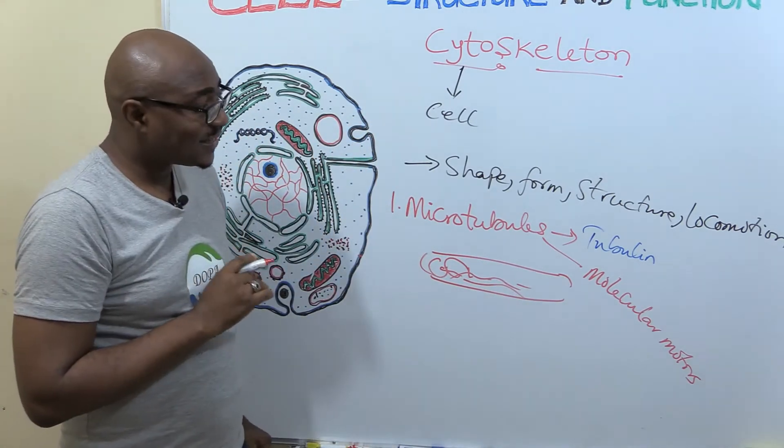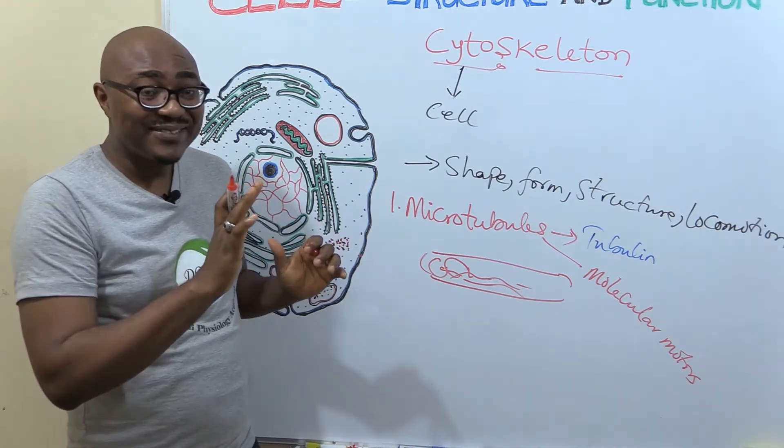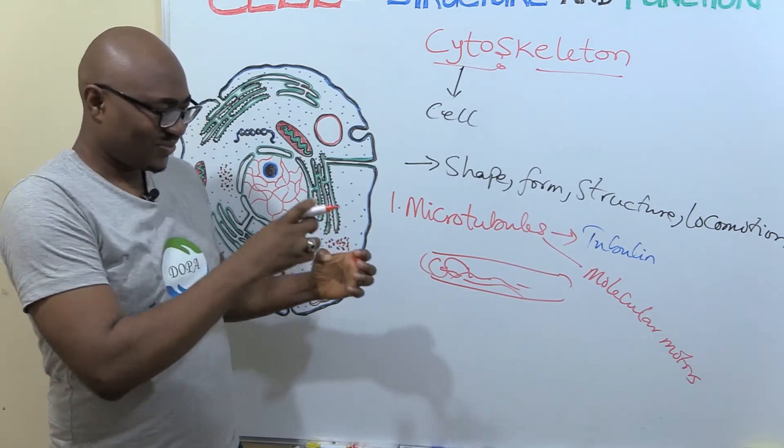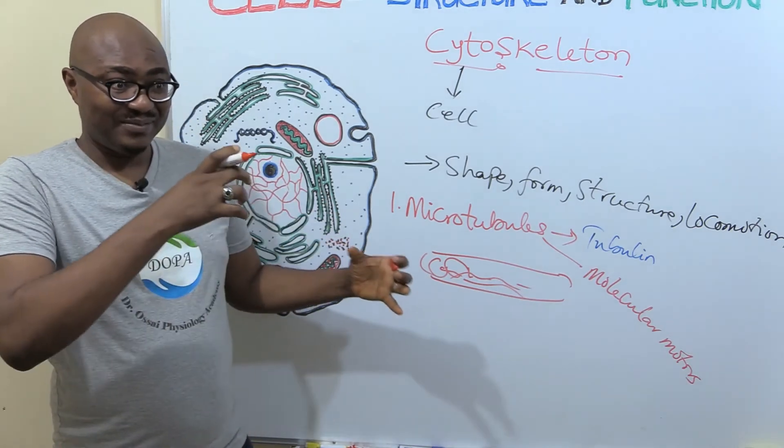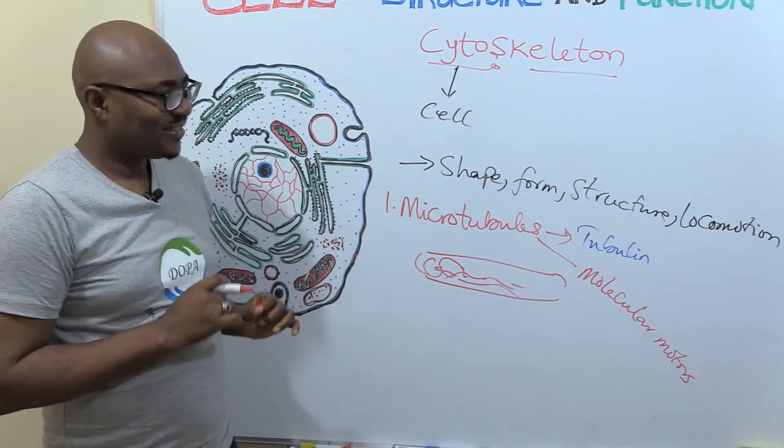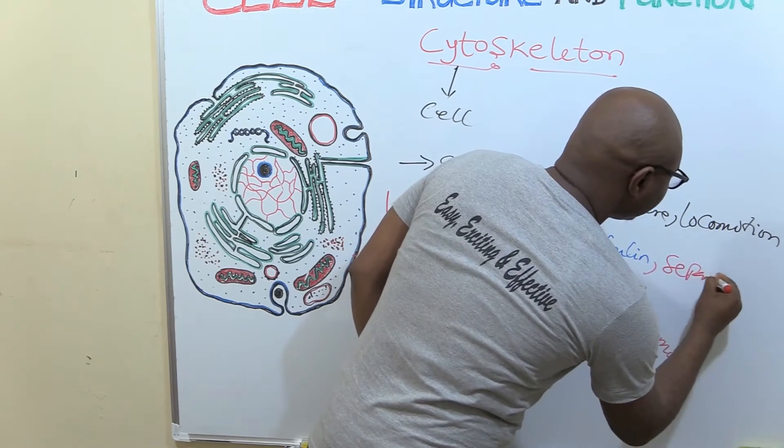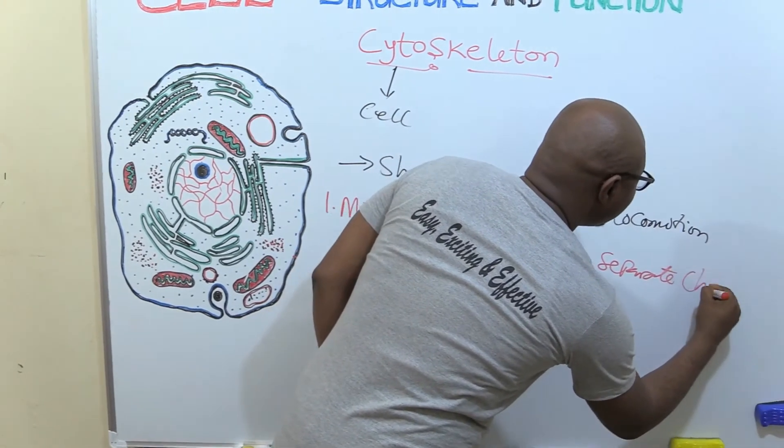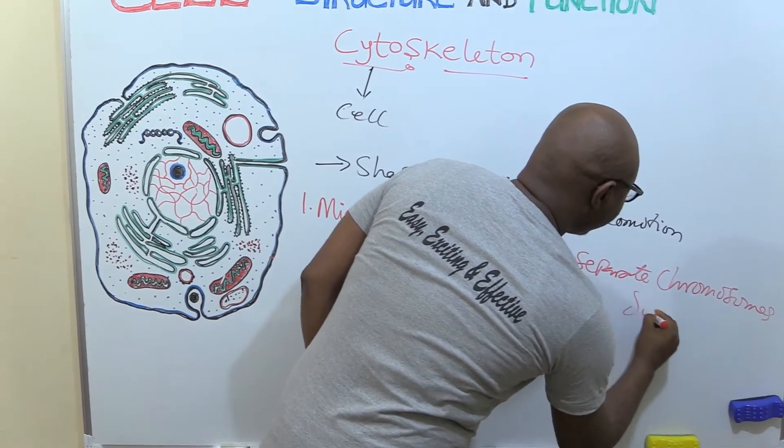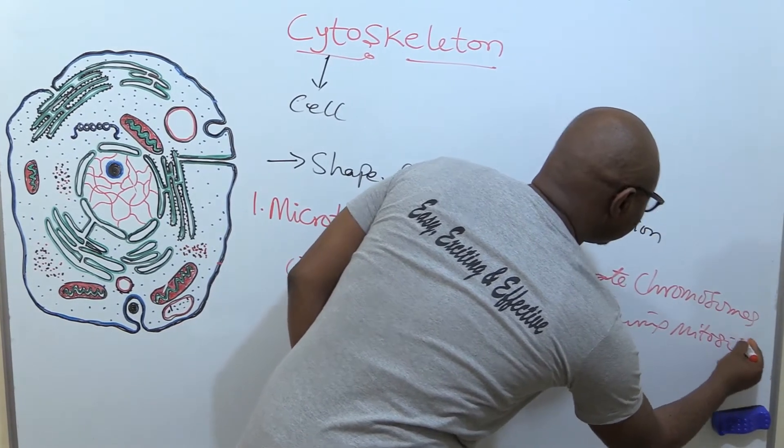Another thing that it does is that when chromosomes are trying to separate during mitosis, it's the microtubules that help to separate them to two different ends, the poles. That's what they do. They help to separate chromosomes during mitosis.